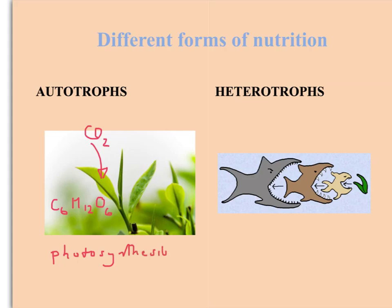Now because the autotrophs are the start of all the food chains, they're called producers. Heterotrophs on the other hand can't make their own food, so they have to consume complex organic molecules like glucose, and it passes down the food chain. Obviously all the food chains start here with the producer.